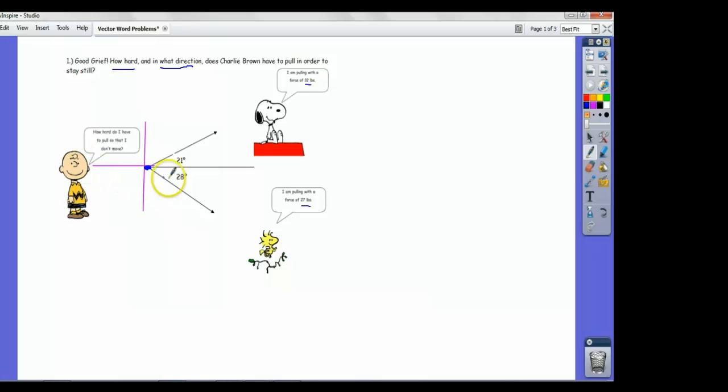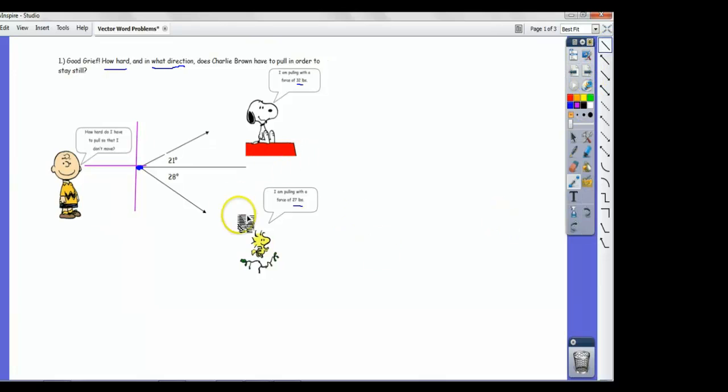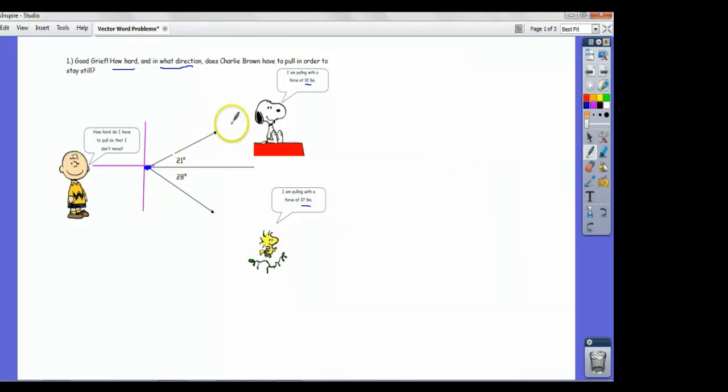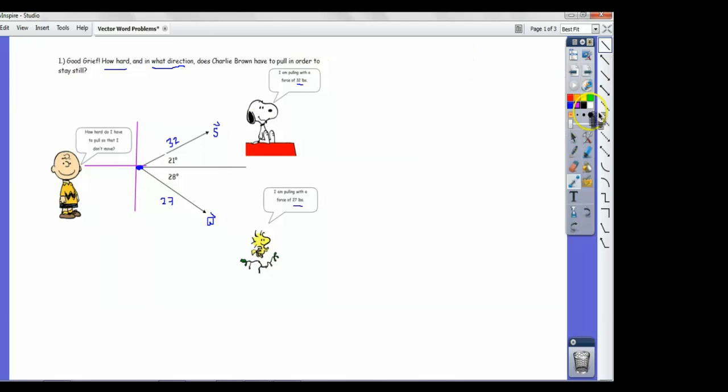We want to know how hard does Charlie Brown have to pull so it stands still and also in what direction. He's got to be pulling in the exact opposite direction of what it feels like to him. Because they're pulling at two different angles, as far as Charlie's concerned it really feels like there's one person pulling in a direction kind of in between here. That's where vector addition comes in, because if you add Snoopy's and Woodstock's vectors. Let's label these things. Let's call Snoopy's vector S for Snoopy, let's call Woodstock's W for Woodstock. He's pulling 27 pounds, that's the magnitude of our vector, and Snoopy's pulling at 32 pounds.